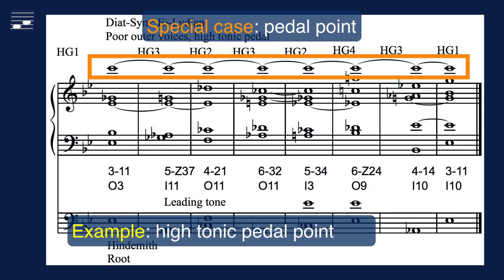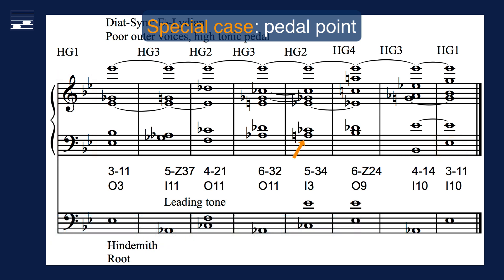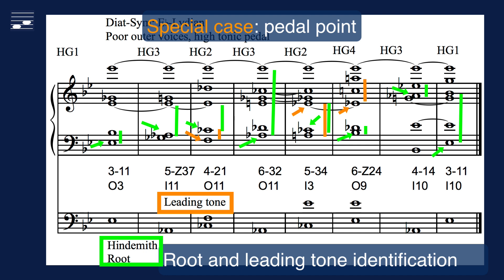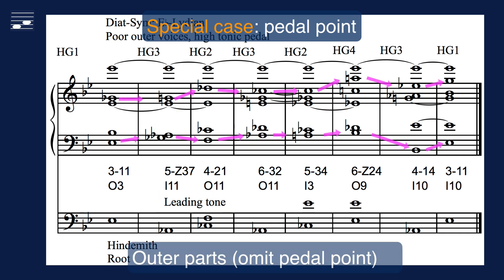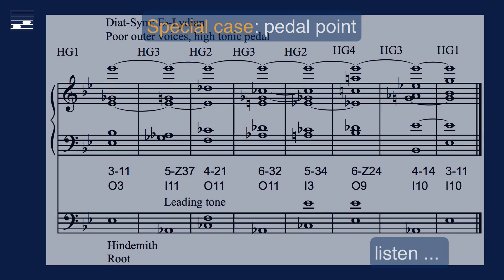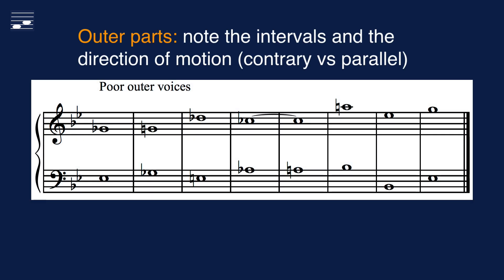The second outer part example contains an upper part tonic pedal point. It is also with a diatonic bass in E-flat Lydian, a non-diatonic pitch A in measure 5, and with cadential closing. Tension curve and pitch class sets are identical to the previous example. Since the voicing is different, we now obtain different Hindemith roots and leading tones shown in the bottom staff. This example was designed with poor outer parts quality. Also, many non-diatonic altered pitches resolve in the wrong direction. I will play the outer parts in isolation so you can discern the poor quality when compared to the previous example.